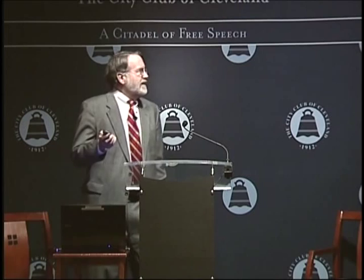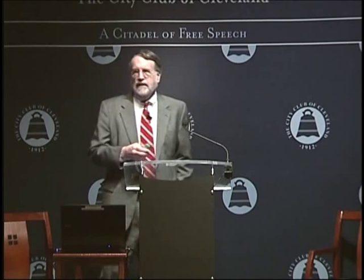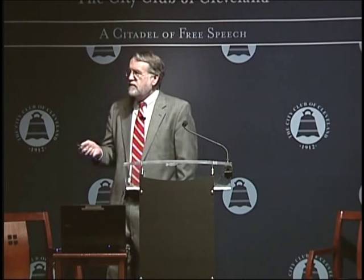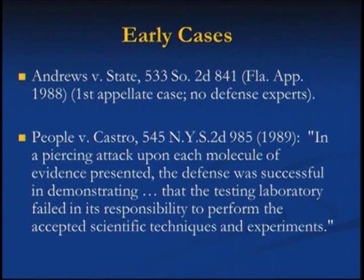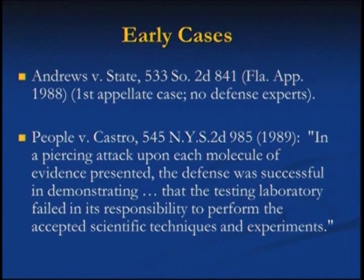The structure of DNA was identified by scientists in 1953 — Crick and Watson. Its first forensic use was in 1985 in the United Kingdom, and it was introduced the next year into American trials. The early cases include Andrews, the first reported case, and the Pellett case. Typically with new scientific evidence, there was no defense attorney and not much of a challenge in those cases.